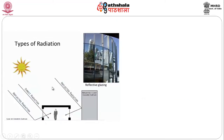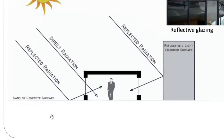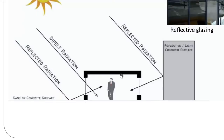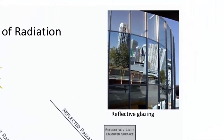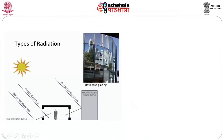Looking at the different types of radiation: imagine a person within a building with a large concrete building nearby and paving below. You have direct radiation entering through the glazing, and reflected radiation from both the paving surface and the nearby concrete building entering the window. So you can have reflected radiation from two different sources as well as direct radiation simultaneously. Reflective glazing reduces the level of sunlight entering the building.